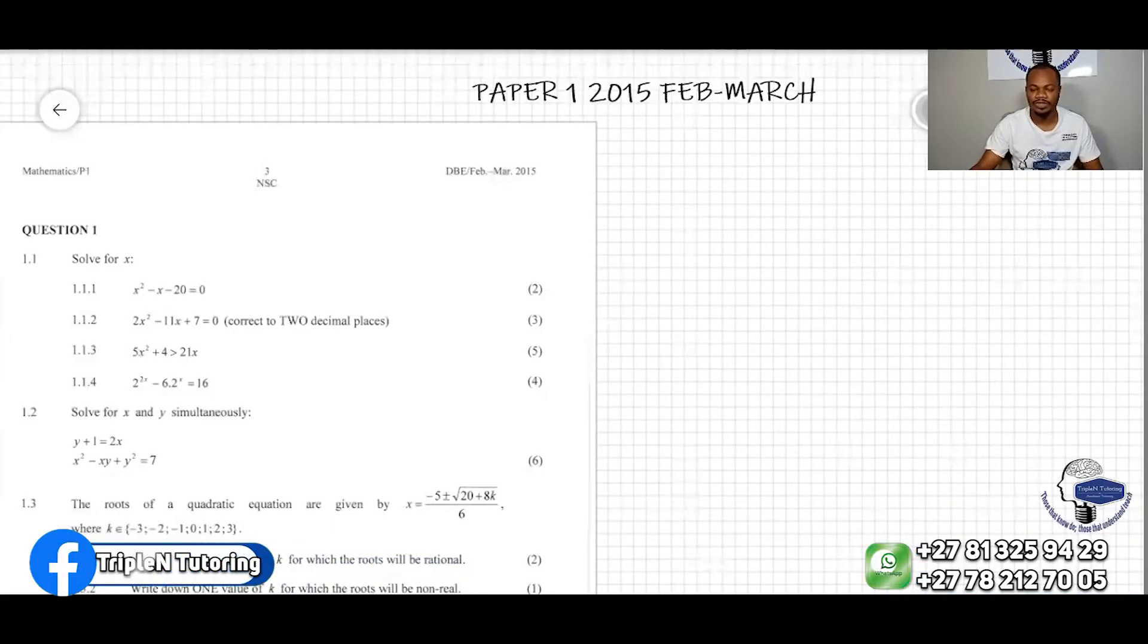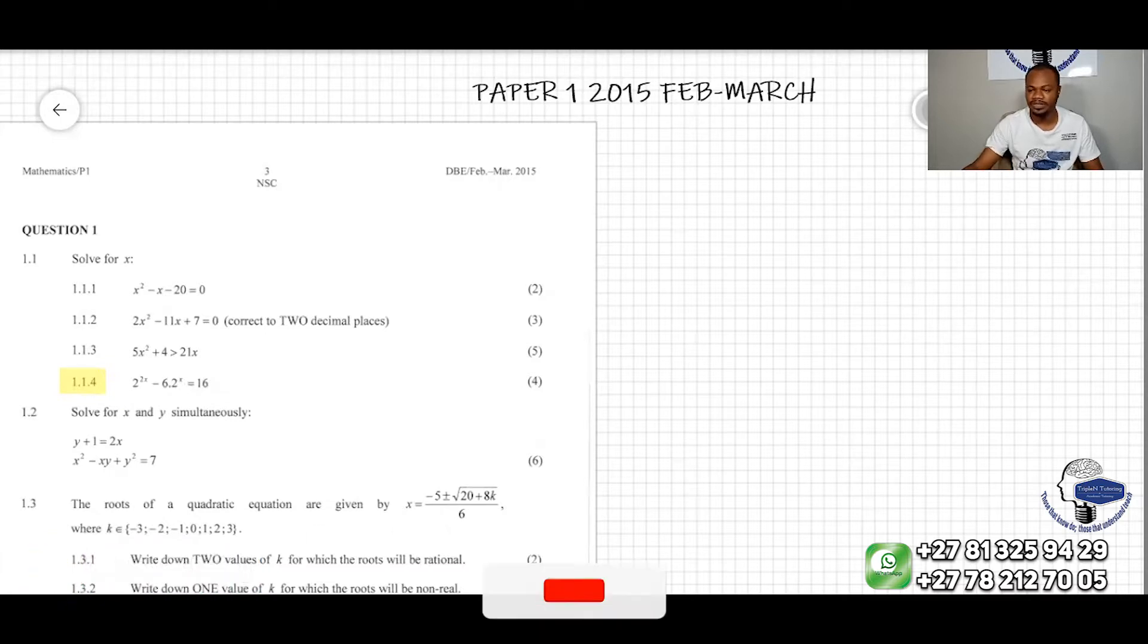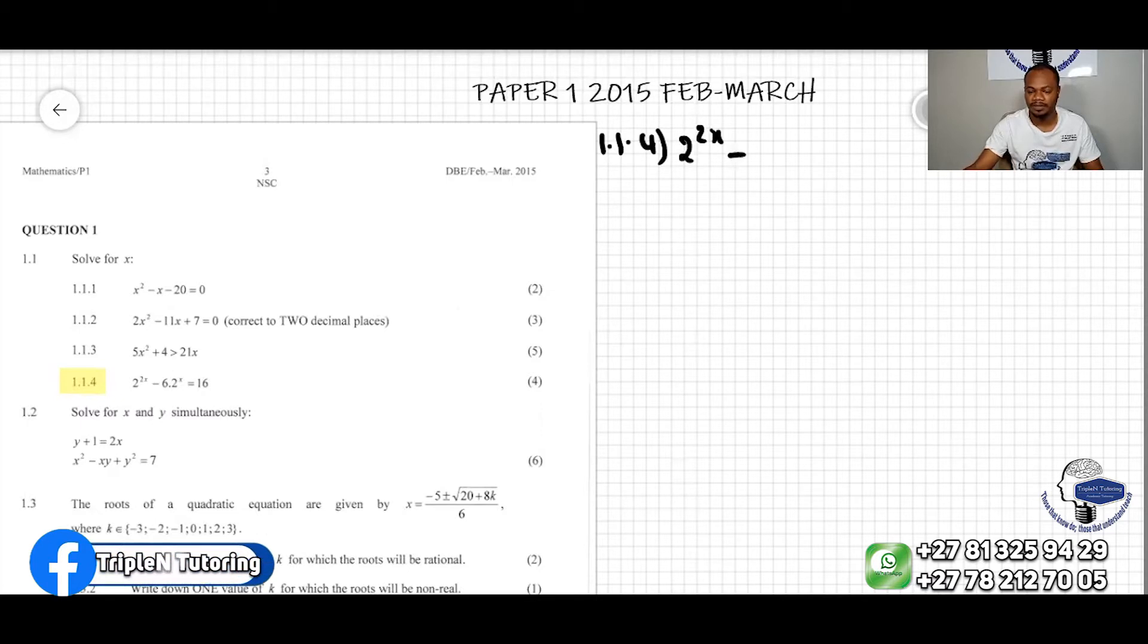Well, we're going to do question 1.1.4. As you can see, the question says 2 to the 2x minus 6, 2x equal to 16. I'm going to write the question here. 1.1.4 is 2 to the 2x minus 6 times 2x equal to 16.